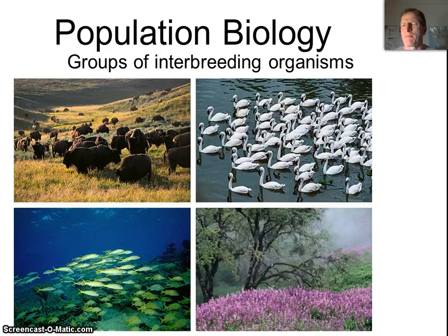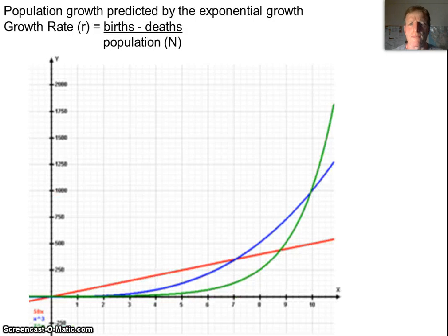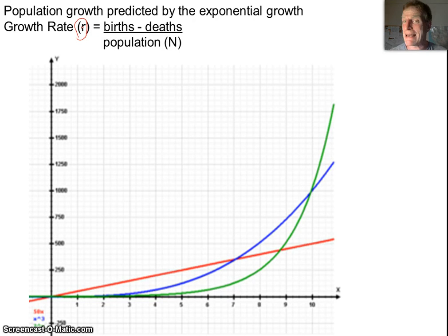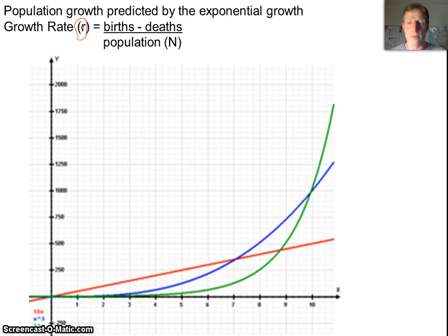In this video, we're going to talk about populations and population growth, and how populations tend to grow. If we look at population growth, the symbol we use is little r, which stands for the population growth rate, and we calculate that by saying the number of births in the population minus the number of deaths, divided by the population. So if I've got 10 births, 5 deaths, and a population of 100, that's 10 minus 5 divided by 100, which is a population growth rate of about 5%.